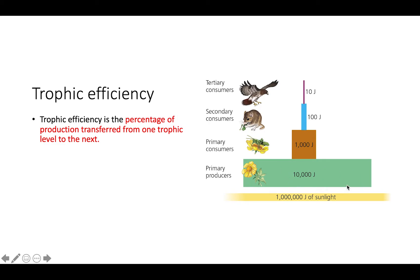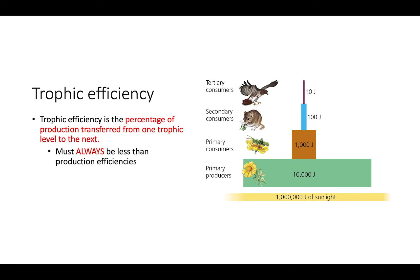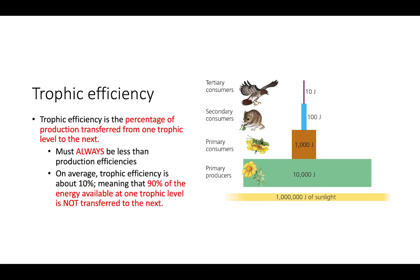For example, that would be the percentage of production transferred from primary producers to consumers, then secondary consumers, and then lastly to tertiary consumers. This trophic efficiency has to always be less than our production efficiencies. On average, trophic efficiency is about 10%, which means that 90% of the energy available to one trophic level is not transferred to the next trophic level.